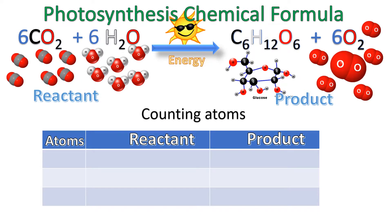So let's count the atoms to make sure they're balanced. When we count atoms, remember this whole thing is a molecule — we don't want to count the molecule. We want to count the atoms. The atoms are these little pieces right here. The red area is the oxygen, and the gray area is going to be the carbon. We want to count just the atoms, and I always say start from left to right, because that's how we read.